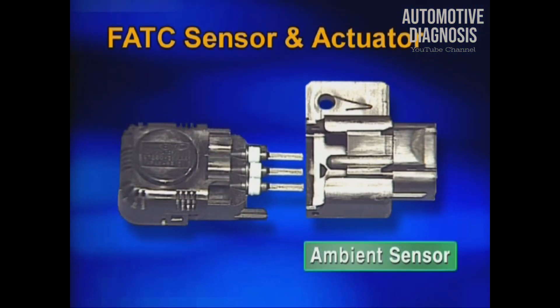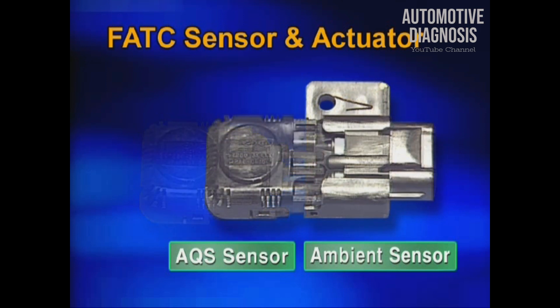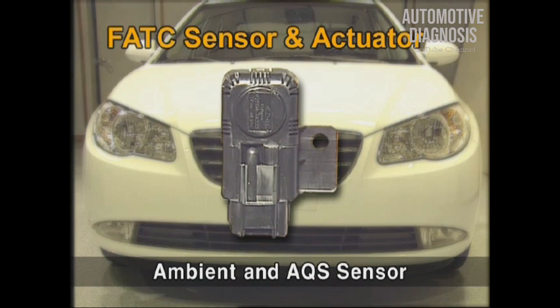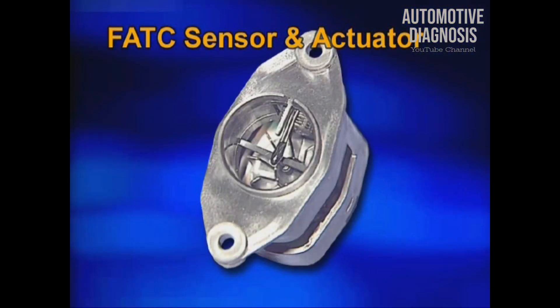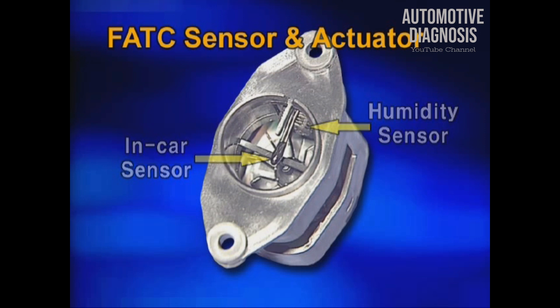The ambient temperature sensor detecting the temperature of the outside and the AQS sensor detecting the contamination degree of outer air are integrated. It is installed at the center support frame at the rear side of the front bumper. The in-car air temperature sensor and humidity sensor detecting the temperature and humidity of the cabin's air respectively are also integrated.